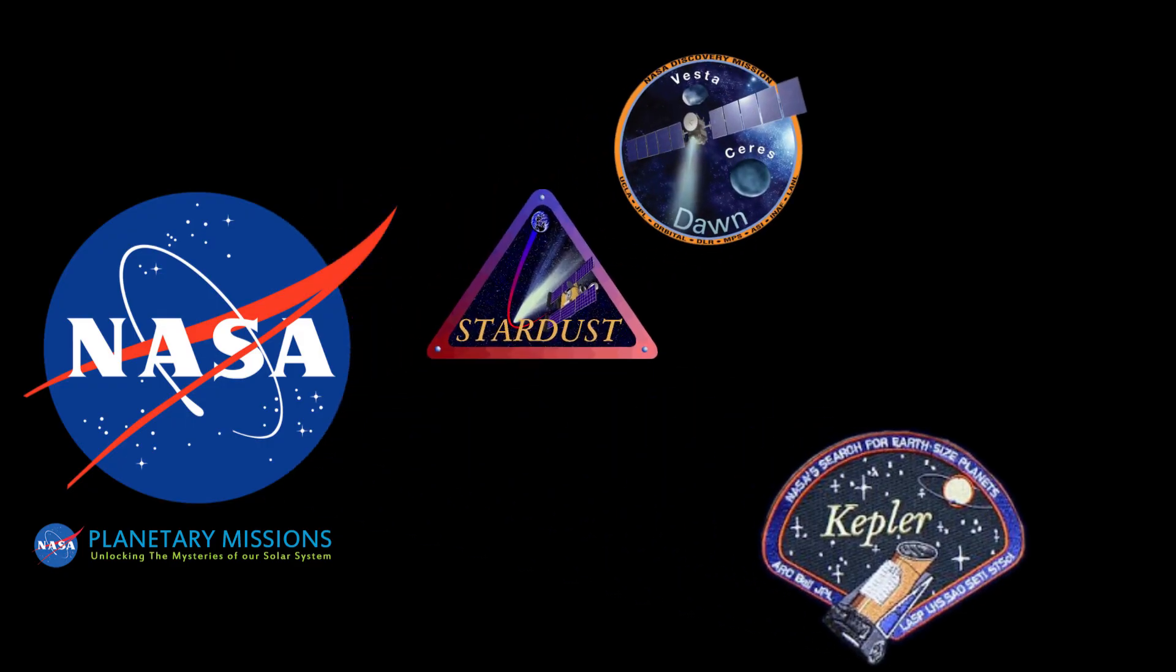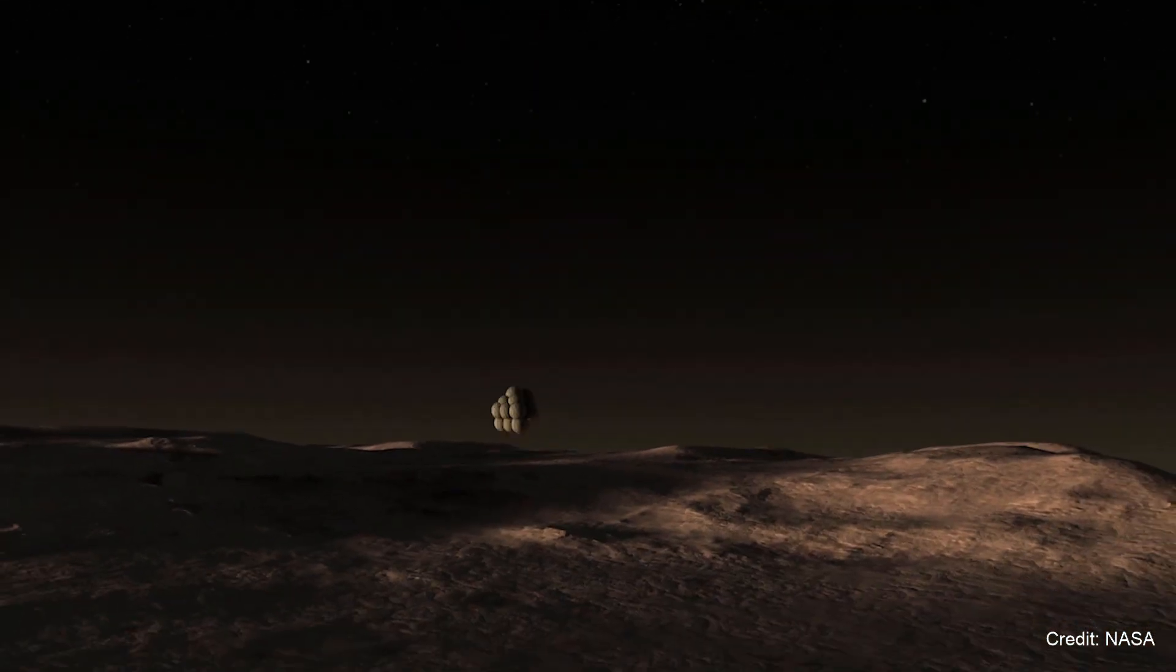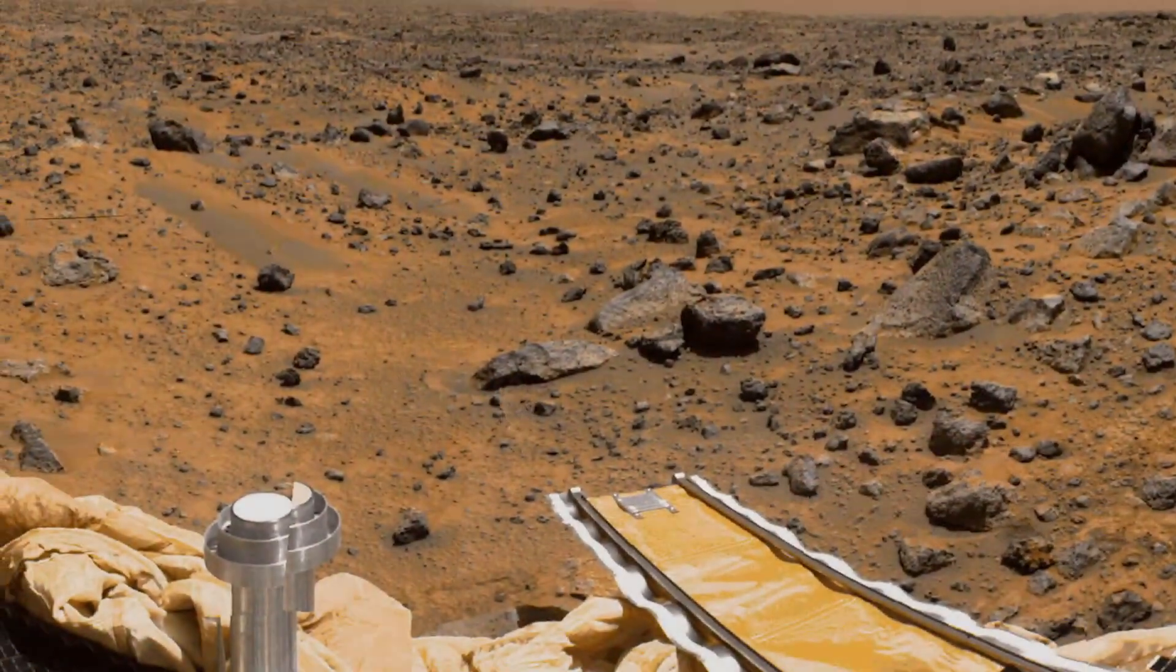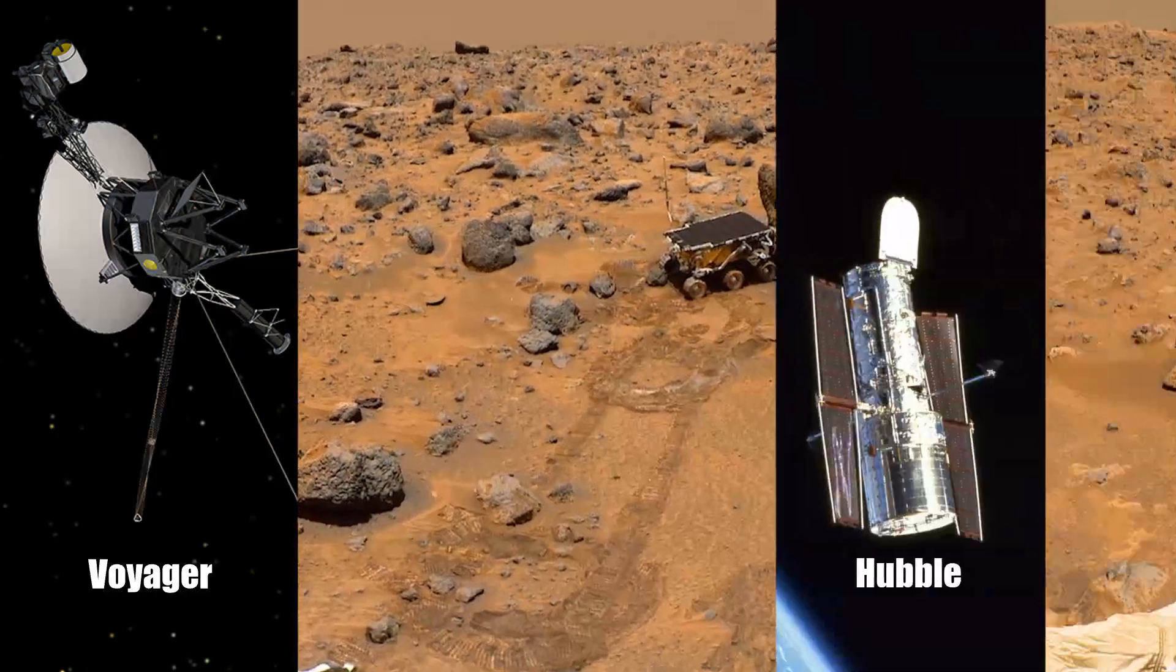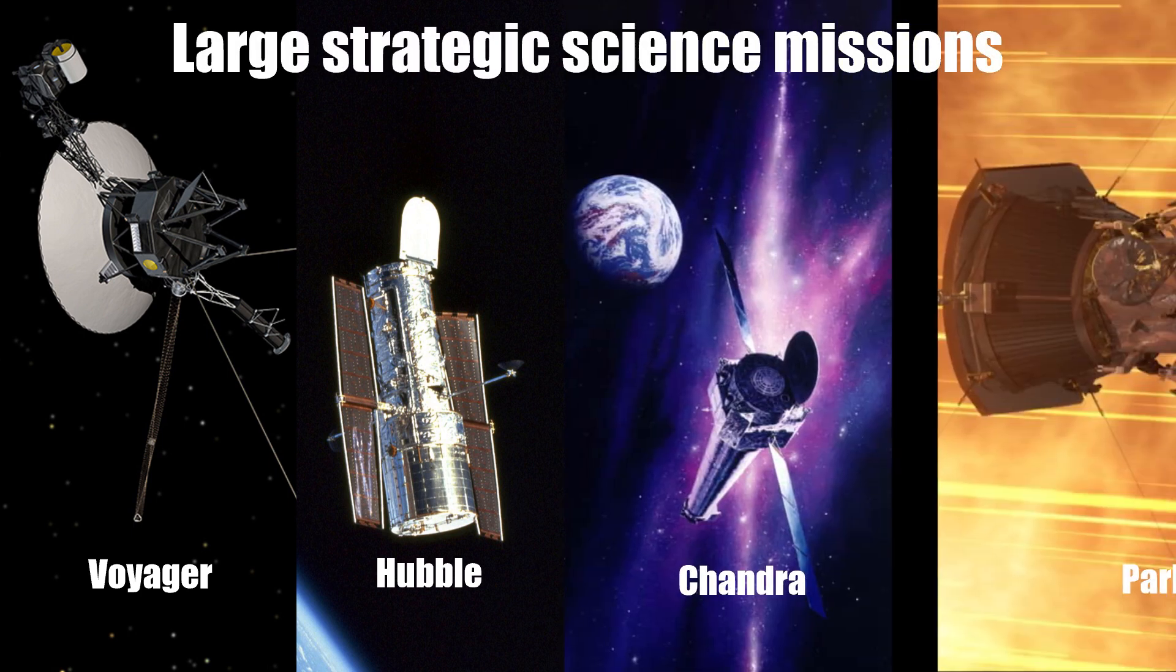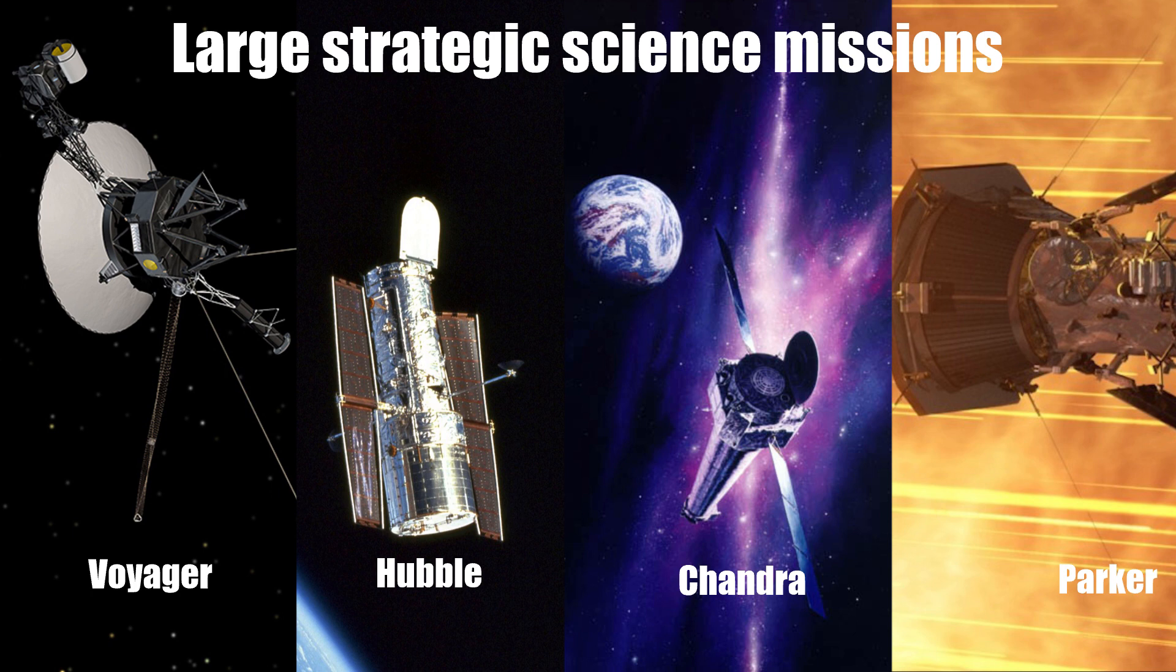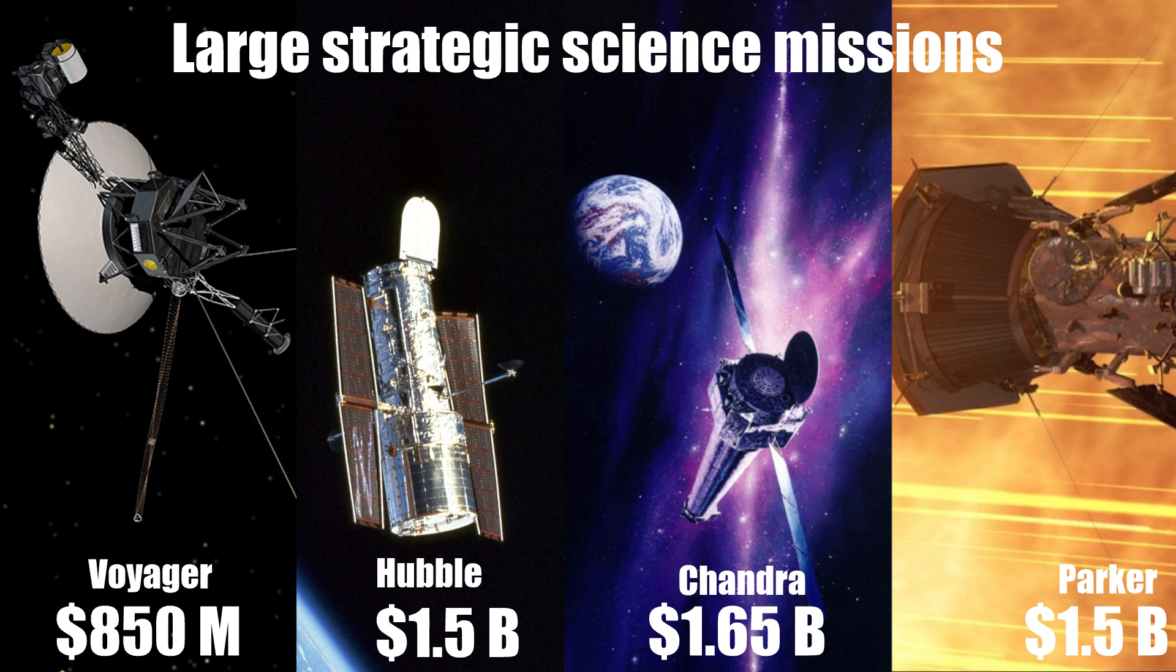NASA's Discovery Program is a series of low-cost, highly focused space missions designed to explore the solar system. For example, the Pathfinder mission from 1997 was part of the Discovery Program. The need to keep the costs down was one reason that Pathfinder used airbags for its final phase of its landing, instead of retro rockets like previous landers. This is in contrast to NASA's flagship missions, or large strategic science missions as they're now called. I like the term flagship better. Sounds more serious. Sounds like something you don't want to lose. And rightfully so. Each flagship mission costs at least half a billion dollars, with the real ones like the Hubble Space Telescope and the Parker Solar Probe costing more than one billion dollars.